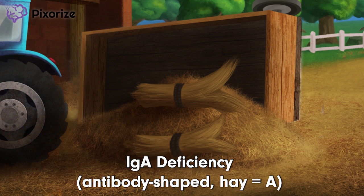Selective IgA deficiency is exactly what it sounds like. On measurement of immunoglobulin levels in the serum, IgA levels are decreased while IgG and IgM levels are usually normal. The disease is called Selective IgA deficiency, so IgA is the only one affected.